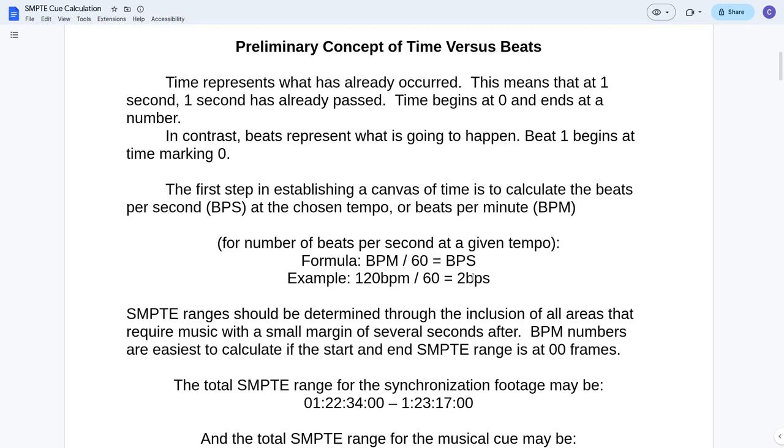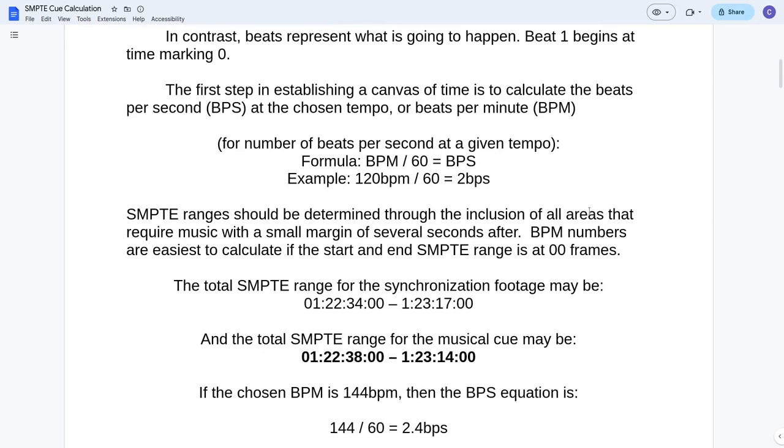You really want to know what the beats per second are because it helps with calculation when you're trying to figure out exactly how many beats are in your cue based on the time range. SMPTE ranges should be determined through the inclusion of all areas that require music with a small margin of several seconds after, especially after. You might even include a margin of several seconds before and then start your timecode count a couple seconds in.